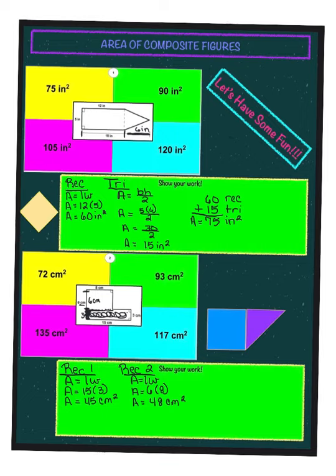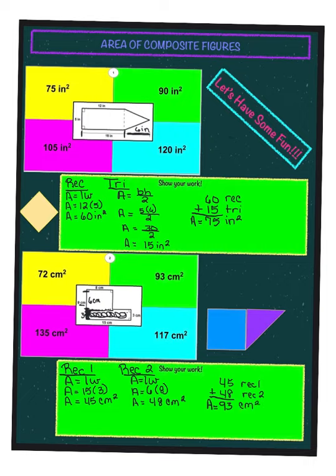To find the area of the composite figure, we add the two rectangles together: 45 for rectangle one plus 48 for rectangle two. When we add these two together, we get 93. So the area of this composite figure is 93 centimeters squared.